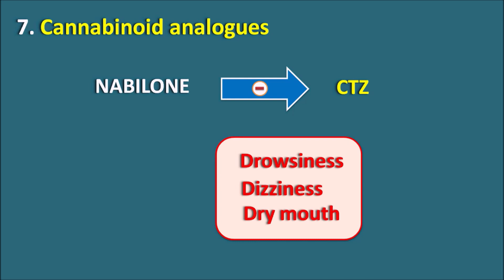5HT3 antagonists mainly control CTZ-induced nausea and vomiting by blocking 5HT3 receptors and are particularly used for chemotherapy-induced nausea and vomiting. Glucocorticoids prophylactically control emesis — dexamethasone and methylprednisolone are the two drugs used. Aprepitant and fosaprepitant as neurokinin-1 receptor antagonists, as well as nabilone as a cannabinoid, also decrease nausea and vomiting by acting on the CTZ. In this way, we have seven types of anti-emetics which are highly useful to control nausea and vomiting produced by various stimuli. Hope you have enjoyed this video — please subscribe to our channel, share it with your friends, and post your comments. Thank you for watching.